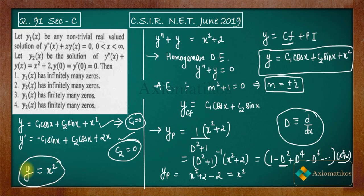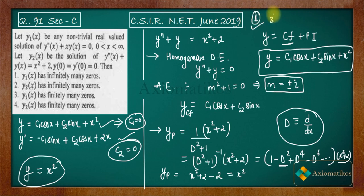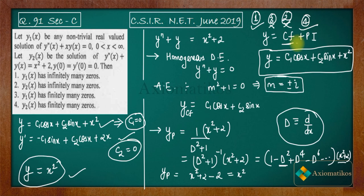Since y2(x) = x² is a polynomial of degree two, it cannot have more than two zeros, so it has only finitely many zeros. Option 2 (infinitely many zeros for y2) is incorrect, and option 4 must be true. Therefore the correct answers are options 1 and 4. If you have any doubts, please ask in the comment section or join our WhatsApp and Telegram groups — links are in the description.